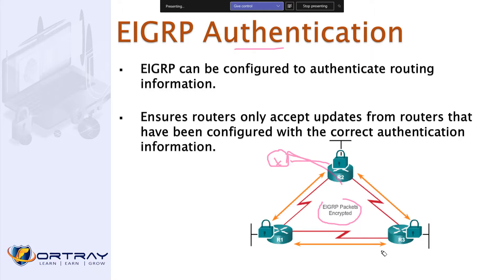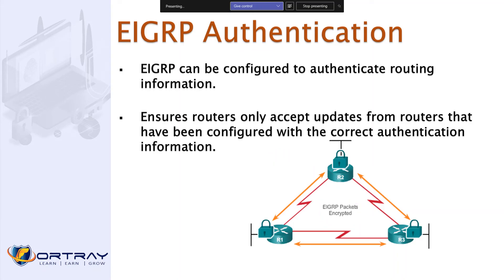If you configure authentication, routers will only accept updates from routers configured with the correct authentication. For example, you can configure a password like 'cisco123' or 'abcd123' between all neighboring routers to ensure only authentication-enabled routers can exchange routing information with each other.